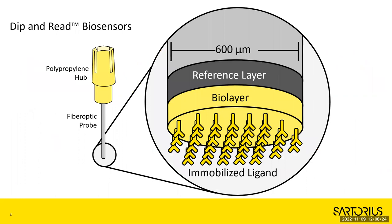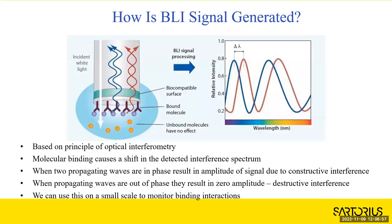These are the different biosensors - they come in a number of chemistries, things like streptavidin, protein A, protein G, and nickel. They're about the size of a small pipette tip. On the very tip is a reference layer followed by the biolayer. White light is shot down through the tip of the biosensor, and when it dips into the well of a 96-well plate, things can start binding to it. Part of the light bounces back off the reference layer at a specific wavelength.